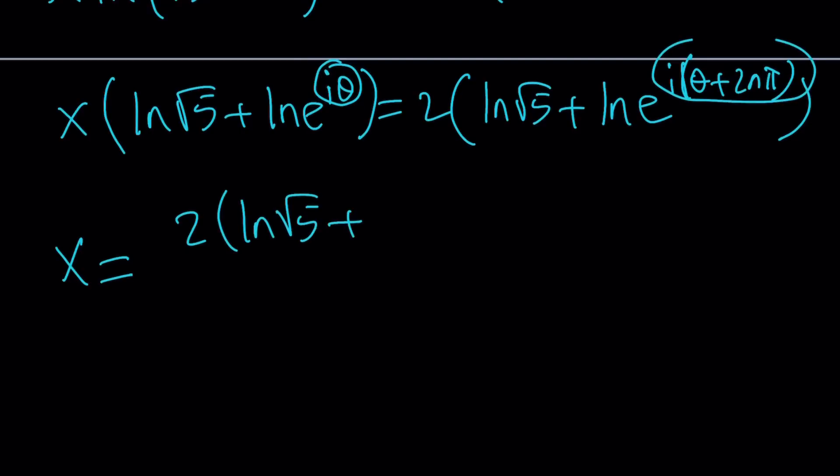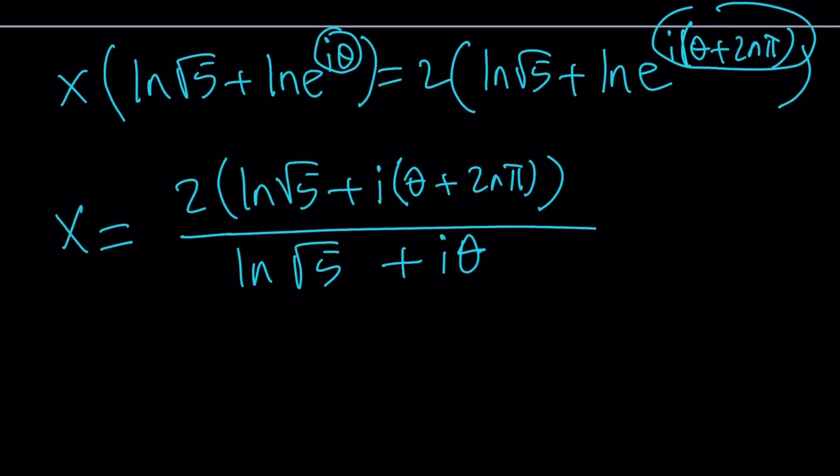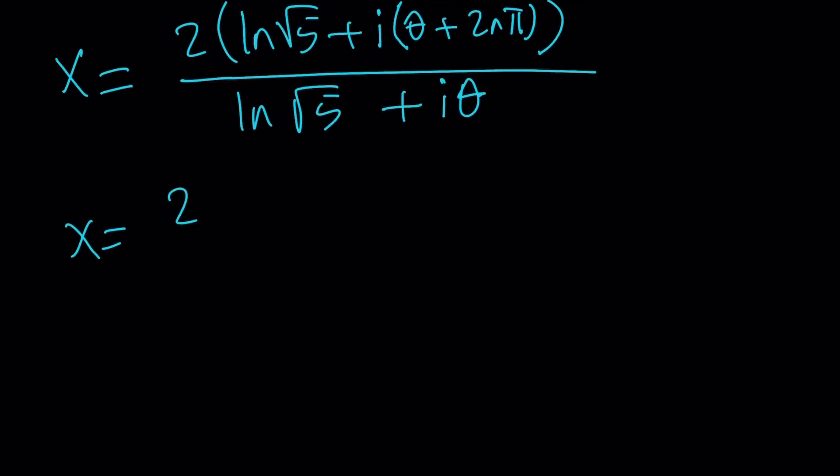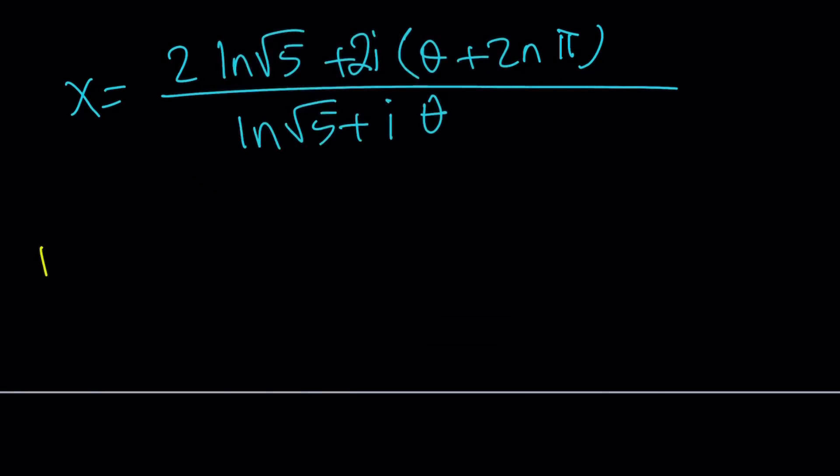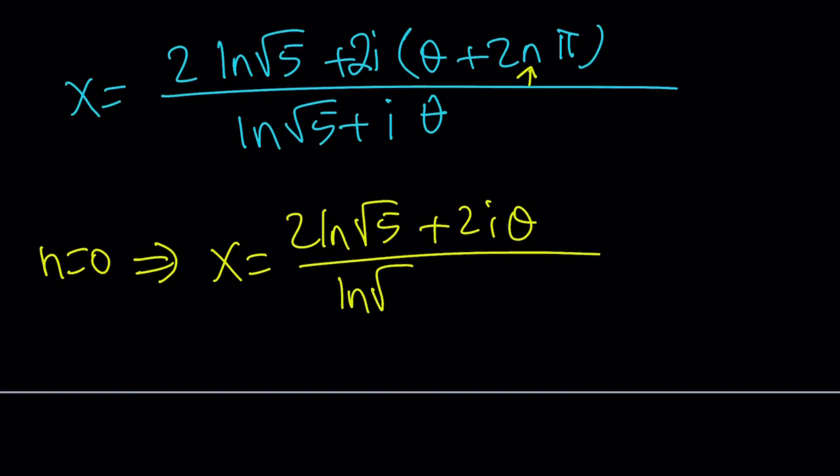This can be written as the exponent because ln(e) is 1. So it's going to be i(θ+2nπ), and we're going to divide it by this. And of course, this is going to be iθ. Now, I just want to distribute this because it looks better that way. 2ln√5, and then i times, of course, there's a 2 here too. 2θ+2nπ. And then at the bottom, we have ln√5 + iθ. Now, here's a special value. If n is equal to 0.